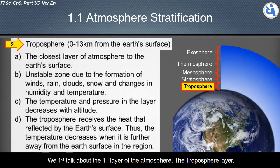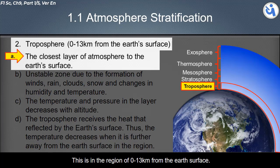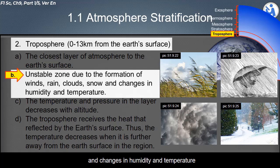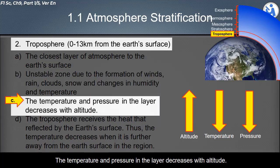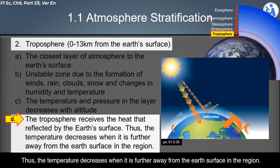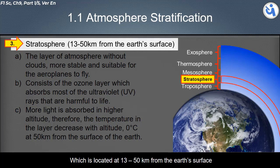The first layer of the atmosphere is the troposphere, the closest layer to the Earth's surface, in the region of 0 to 13 kilometers. This is an unstable zone due to the formation of winds, rain, clouds, snow, and changes in humidity and temperature. The temperature in this layer decreases with altitude, as the troposphere receives heat reflected by the Earth's surface.